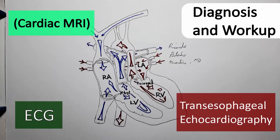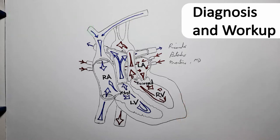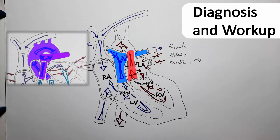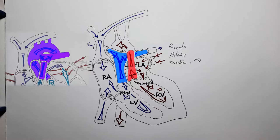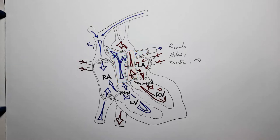An electrocardiography is also important to detect abnormalities in the conduction system of the heart. On imaging studies, what draws attention is the presence of parallel great vessels. The pulmonary trunk and the aorta should normally cross; non-crossing great vessels arising from the heart in parallel indicate ventricular arterial discordance.